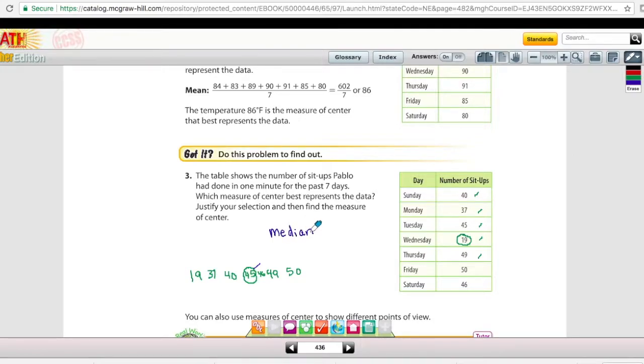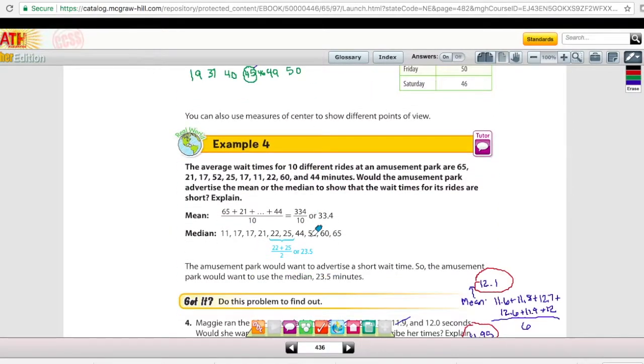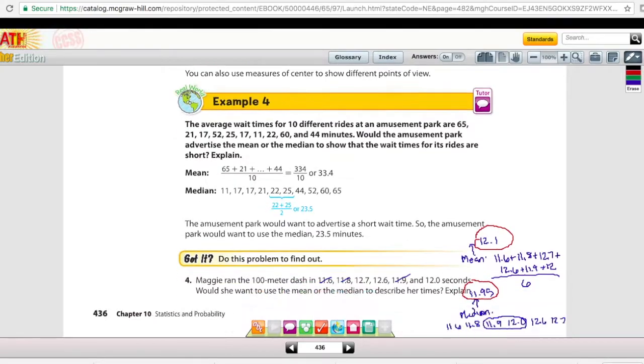At the bottom of page 436, it says to find the mean and the median and then which one would be the better one to report. And so when you're looking at statistics, sometimes one measure is better than the other. So you can find all three of them or in this case two of them and decide which one is better. So on number 4 at the bottom, we have some times for the 100 meter dash and I found the mean and the median for both. The mean was 12.1 and the median was 11.95. And since this is describing her 100 meter dash times, we're going to want to use the shorter time which is in this case the median or 11.95.